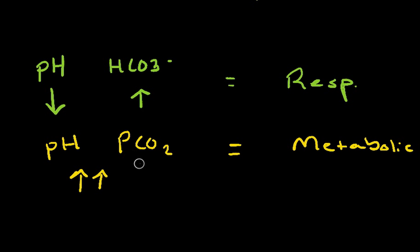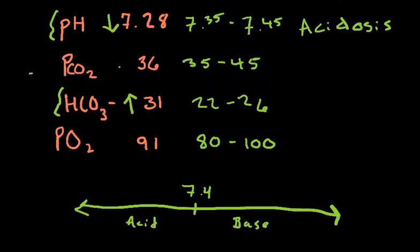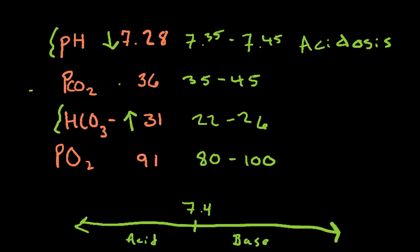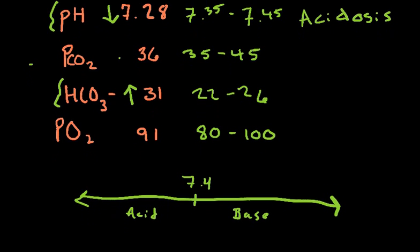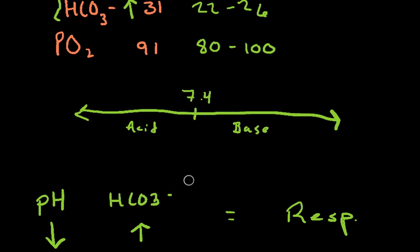And then you just have to remember that it's the bicarbonate that you're comparing to the pH. And then in the metabolic, you just remember that you're comparing the carbon dioxide to the pH, but they have to be going in the same direction. So, I should have, and maybe I'll make another video with some more examples.